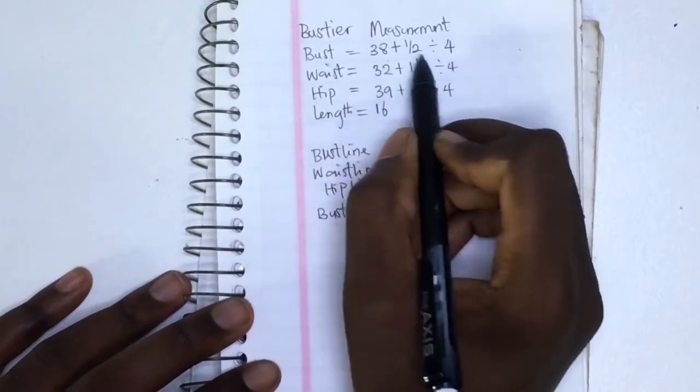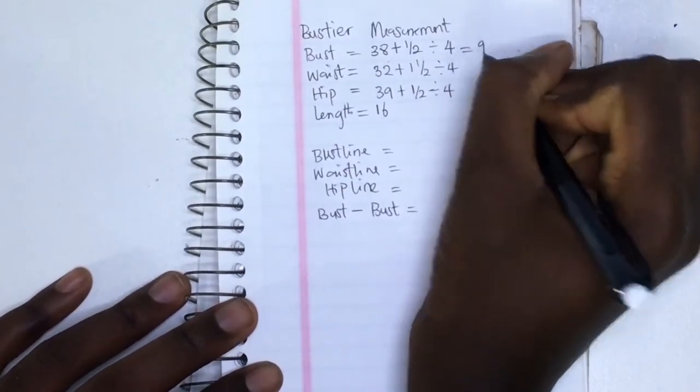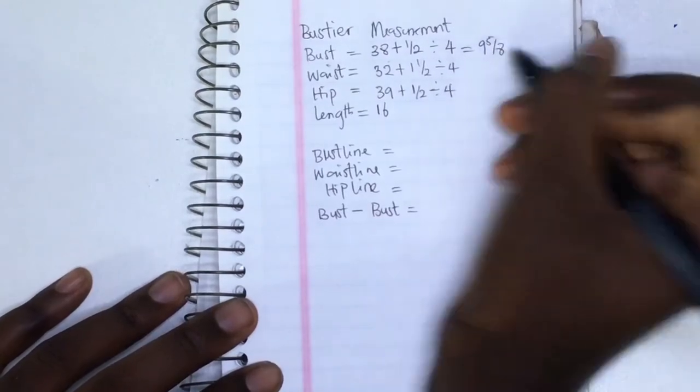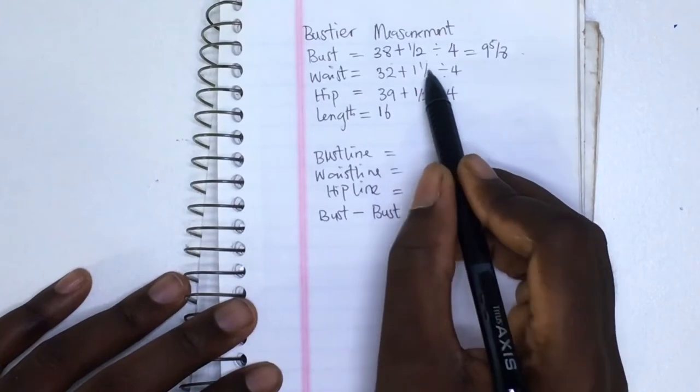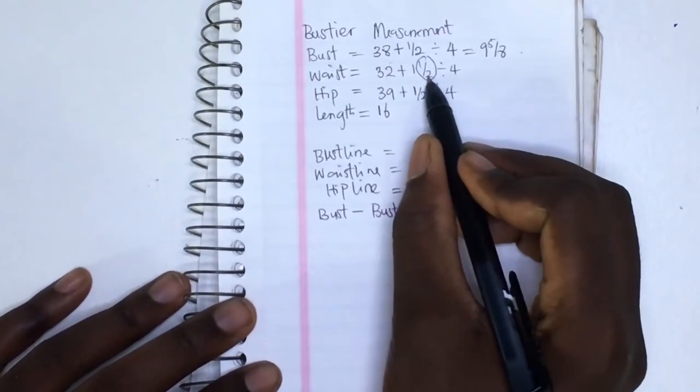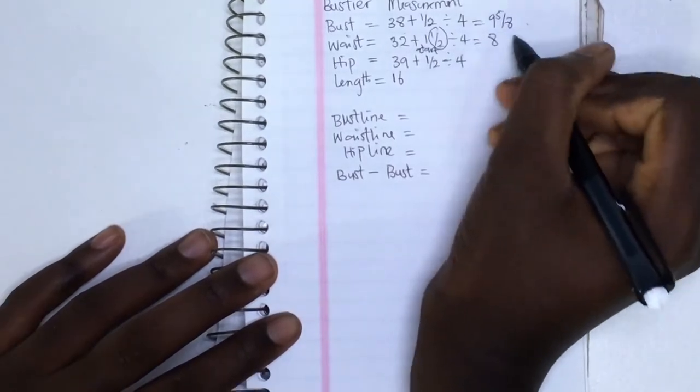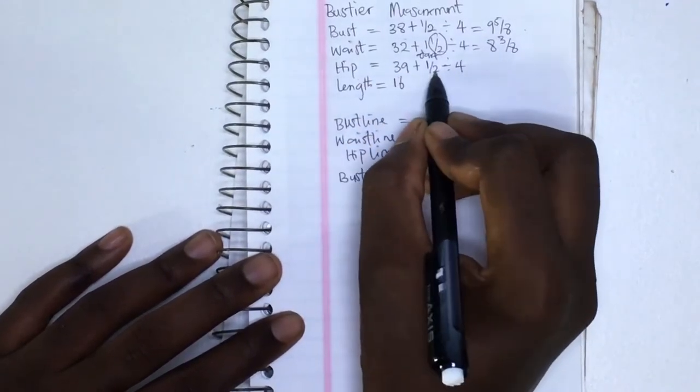I then came in to add half inch to my bust measurement, and then I divided it by four. I did the same for the waist, where I added one and a half inch. The one inch will be for the dart allowance, while the half inch will be for the wearing ease. And for the hip, I added another half inch and I divided it by four.